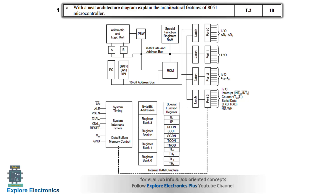There are special function registers including PCON, SCON, TMOD, TCON — all required for special functionality, interrupt handling, and different operations. There are different register banks, each containing 8 registers. The memory is both byte addressable and bit addressable. To handle interrupts, we have system interrupt timers. System timing and control is handled by ALE (Address Latch Enable), PSEN, XTAL1, XTAL2, Reset, VDD, and Ground — all connected to the ports.